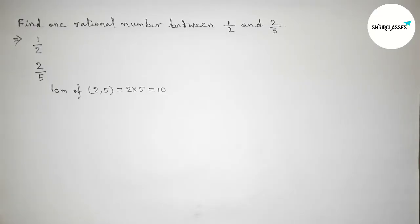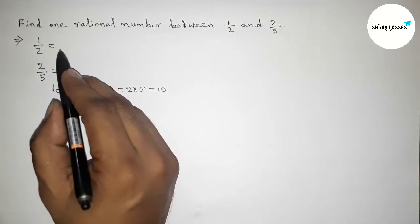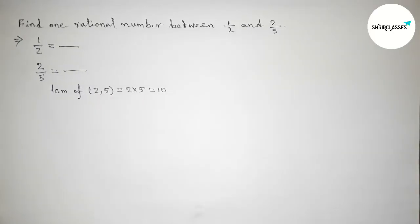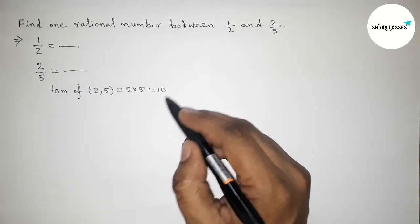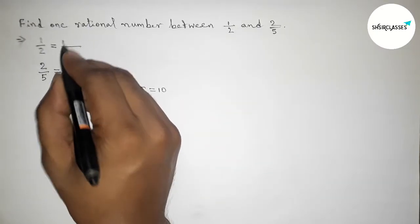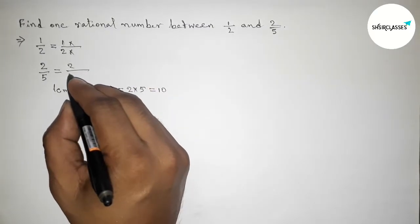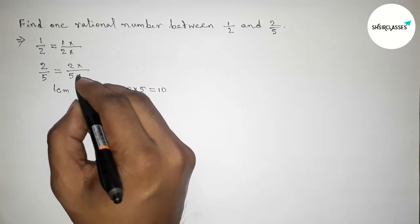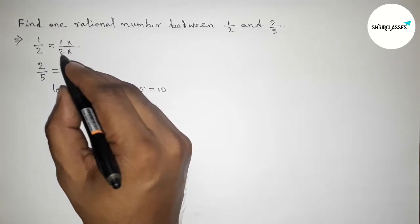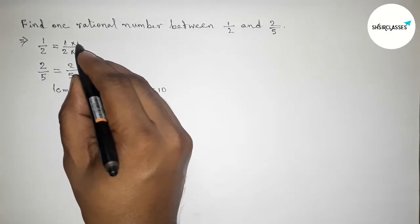Now we have to make the denominator 10. So first, making 10 denominator here: 1 by 2, taking multiplication up and down by 5. And similarly, 2 by 5 by this way. So 2 times 5 is 10, so we have to multiply up and down by 5.